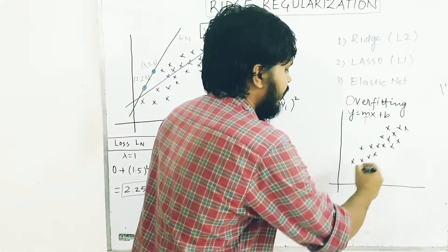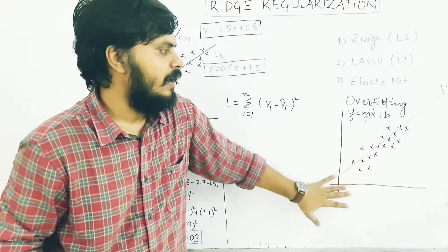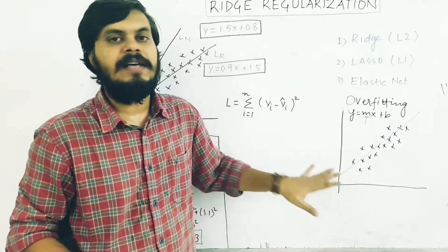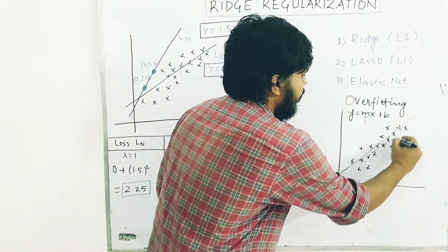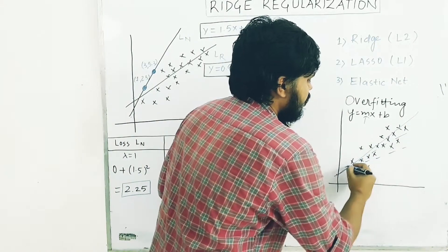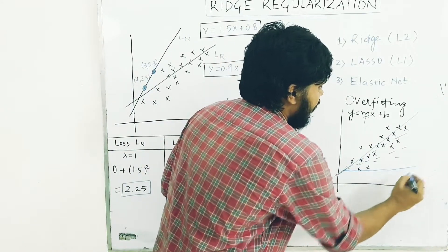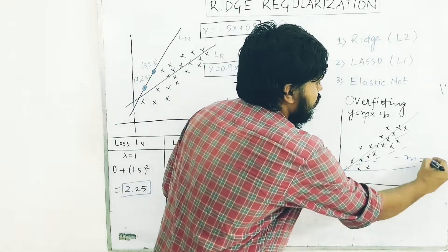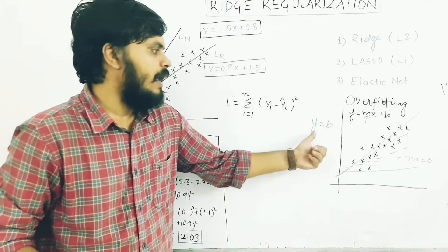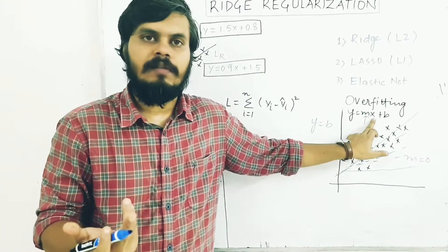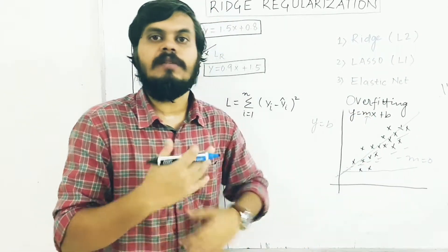Here are some data points. There could be a best fit line passing through them. But if you reduce the slope, eventually you will reach a point where m equals 0, so y would simply be b. That means y does not depend on x at all — and this is underfitting. Your system is underfitting.